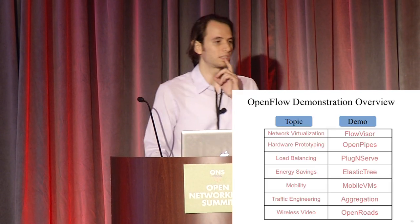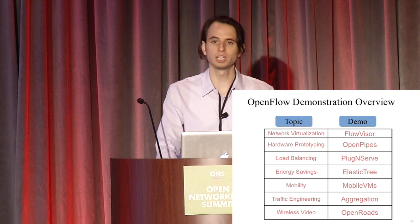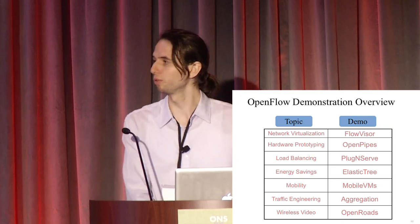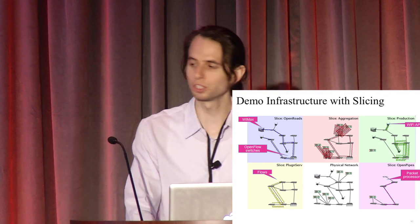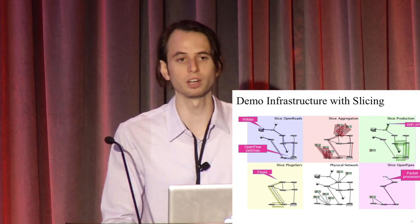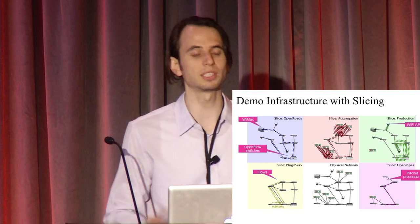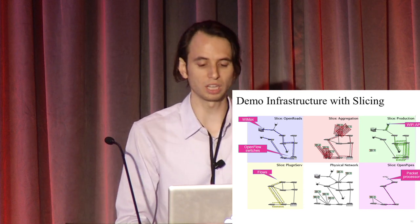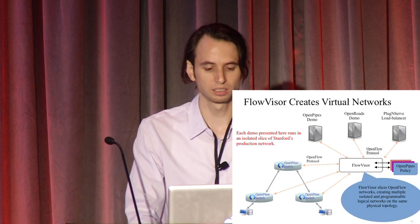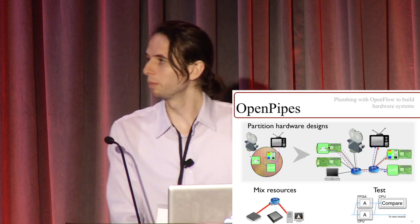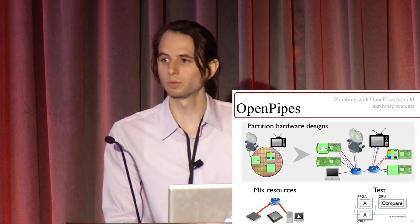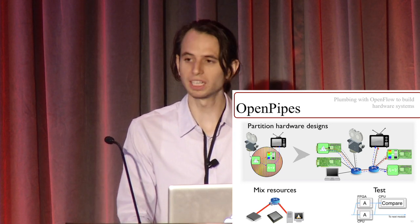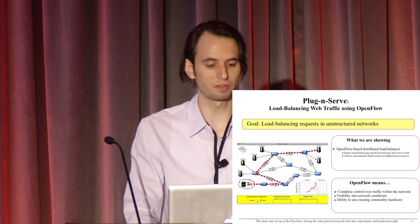Rob had mentioned some of these examples earlier and showed them running on top of FlowVisor, so I can go through them a bit more quickly. These are just a few examples created at Stanford, and the reason I like them is that they cover so many different areas. There is Rob's demo with slicing. OpenPipes was Glenn's splitting up an FPGA — a completely out-of-left-field kind of application.